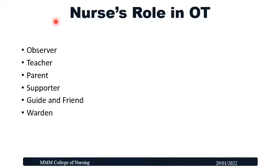The nurse's role in occupational therapy includes working as an observer, teacher, parent, supporter, guide, friend, and warden. As an observer, she observes performance, identifies adaptations, and monitors participation during tasks, and assists in skill development during play or completing certain tasks. As a teacher, she takes control, delegates various activities to different clients, demonstrates, listens, and as a trainer develops competency and skill sets in individuals to perform activities effectively and efficiently.